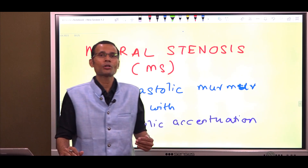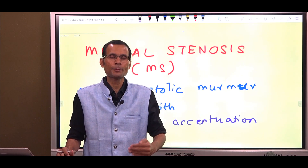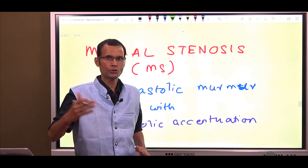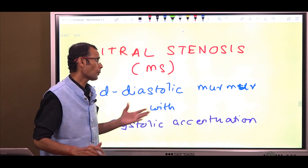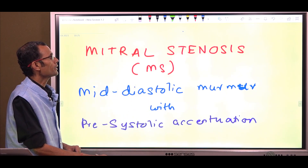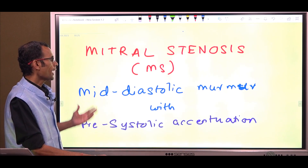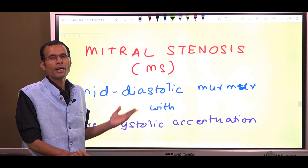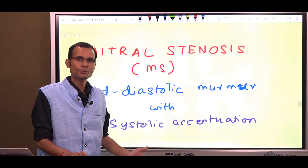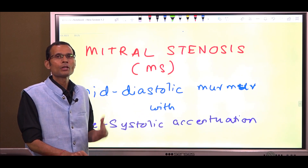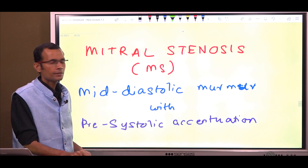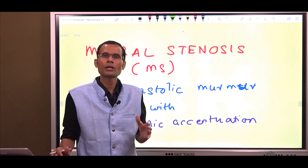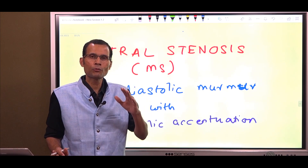I won't dwell much on the medicine aspect of it, but we will stick to physiology and pathophysiologic basis. This topic is mitral stenosis, which has a mid-diastolic murmur with pre-systolic accentuation — classically described like this. And therefore, in this particular video, we will talk about four points.